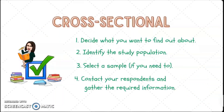So how do you do a cross-sectional study? First, you decide what you want to find out about — this is synonymous to selecting a topic and probably a title. Second, identify the study population, meaning your target respondents. Third, select a sample if you need to; the sample should be 75%. Last, contact your respondents and gather the required information. In quantitative research, this could be a simple survey where you get their answers once and you're done.